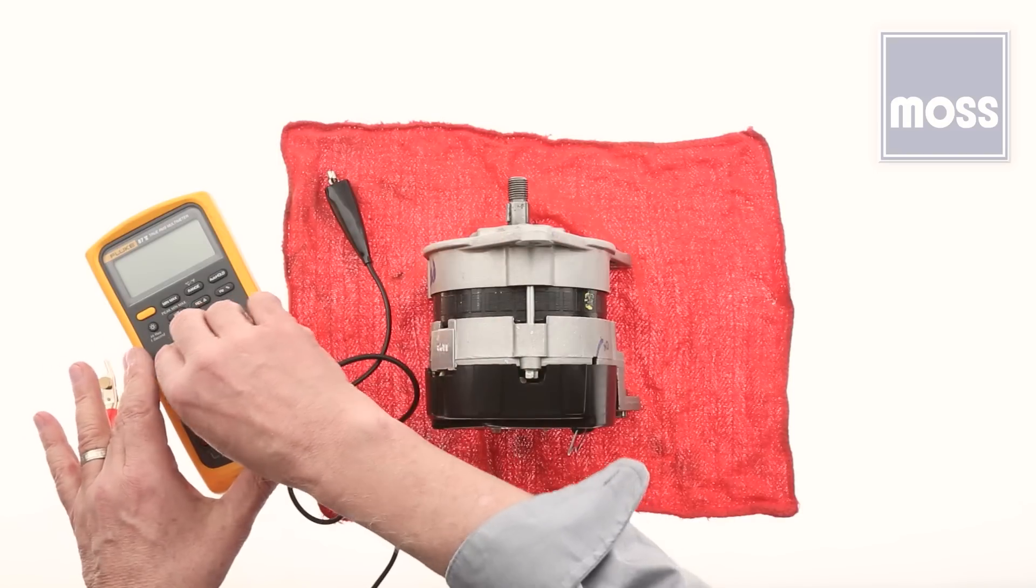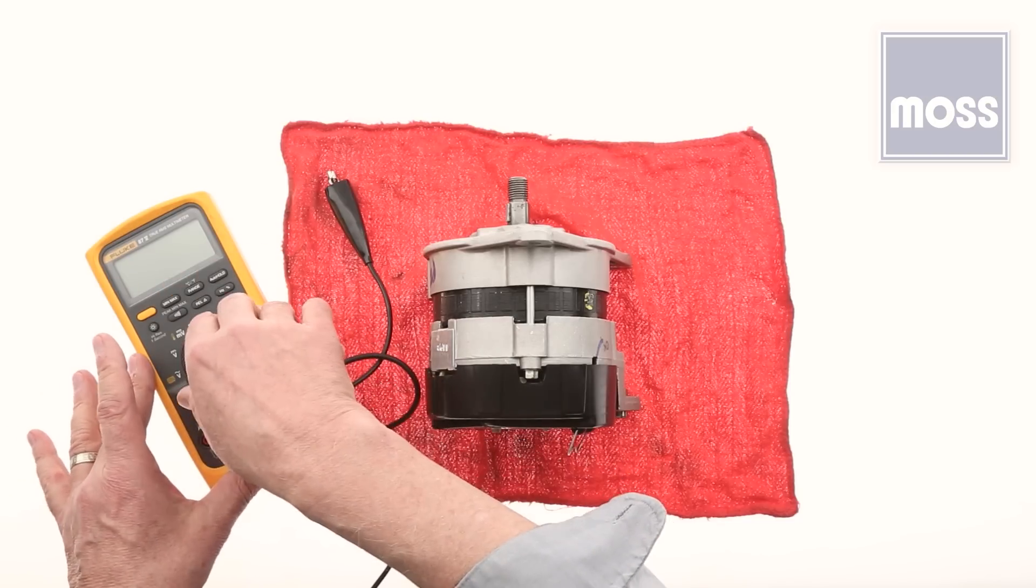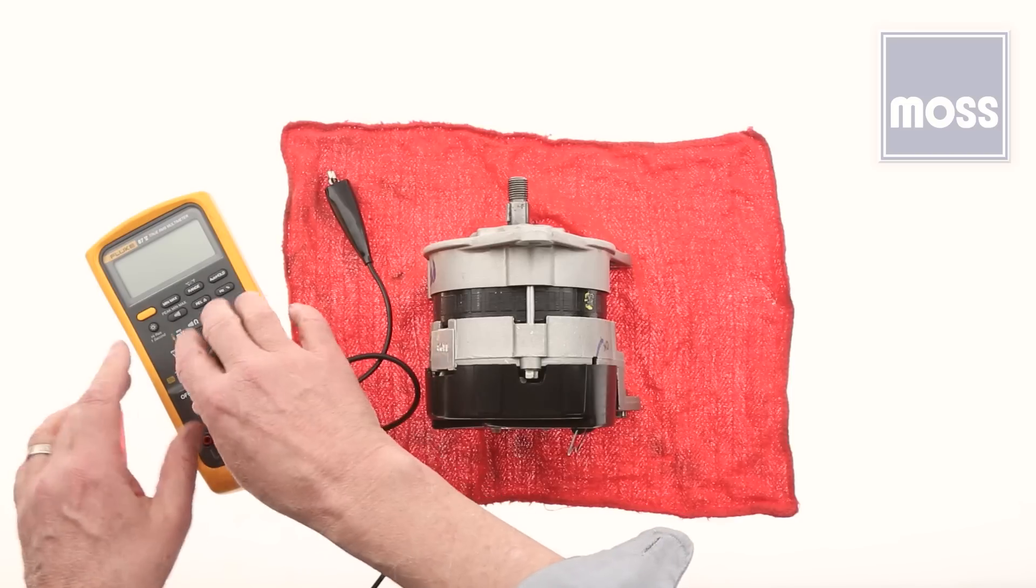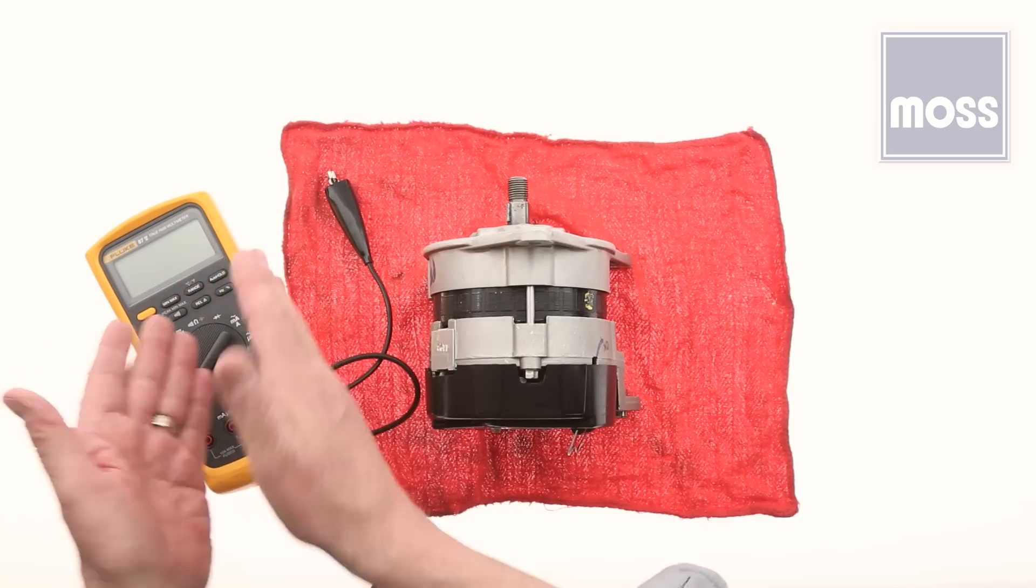We want to set our voltmeter. If it's got a dial, turn it over to 20 volts DC. If your meter has buttons, use the buttons to set it for 20 volts DC. If your meter automatically sets its own range, be sure it's on DC and let the meter work on its own.